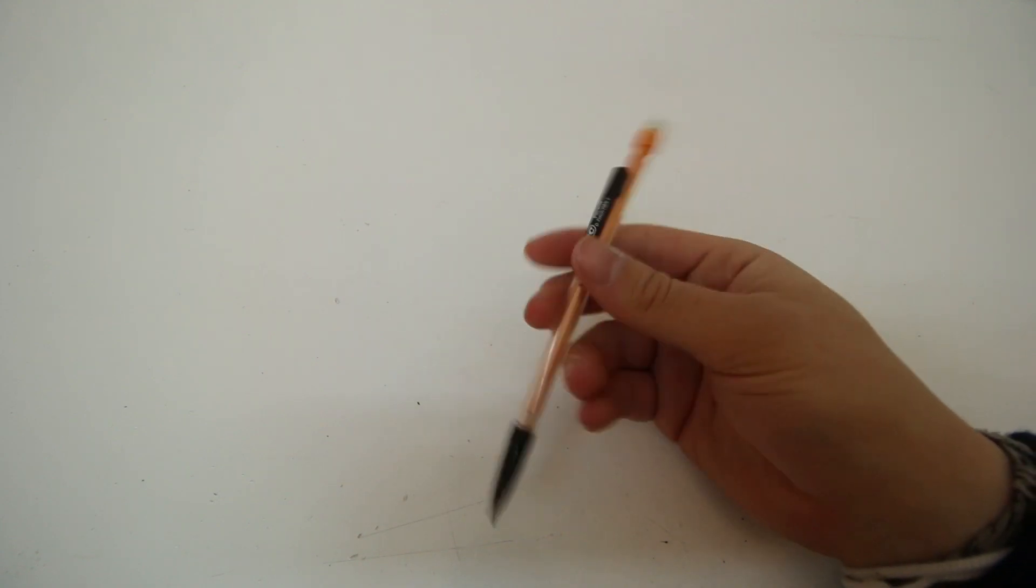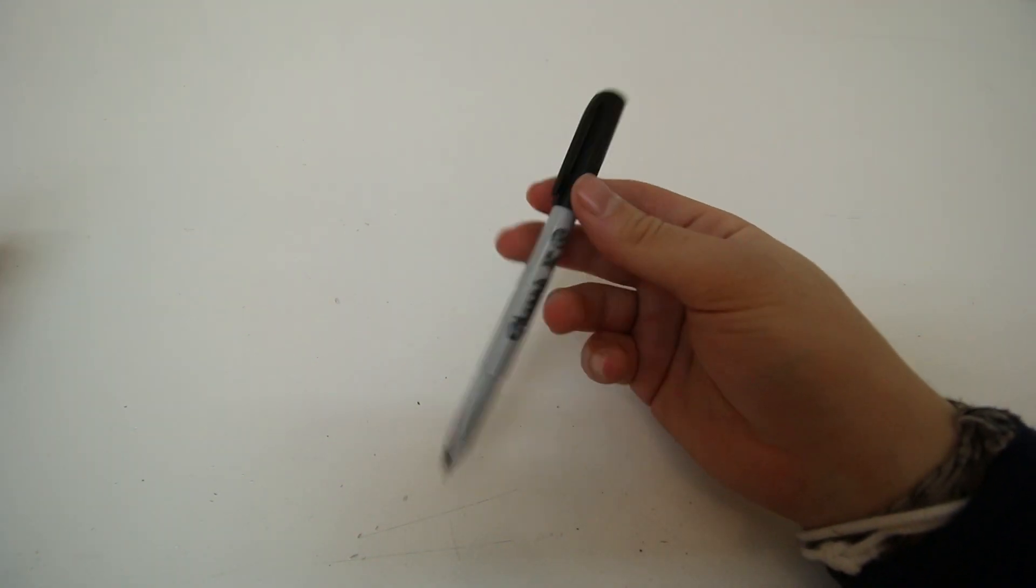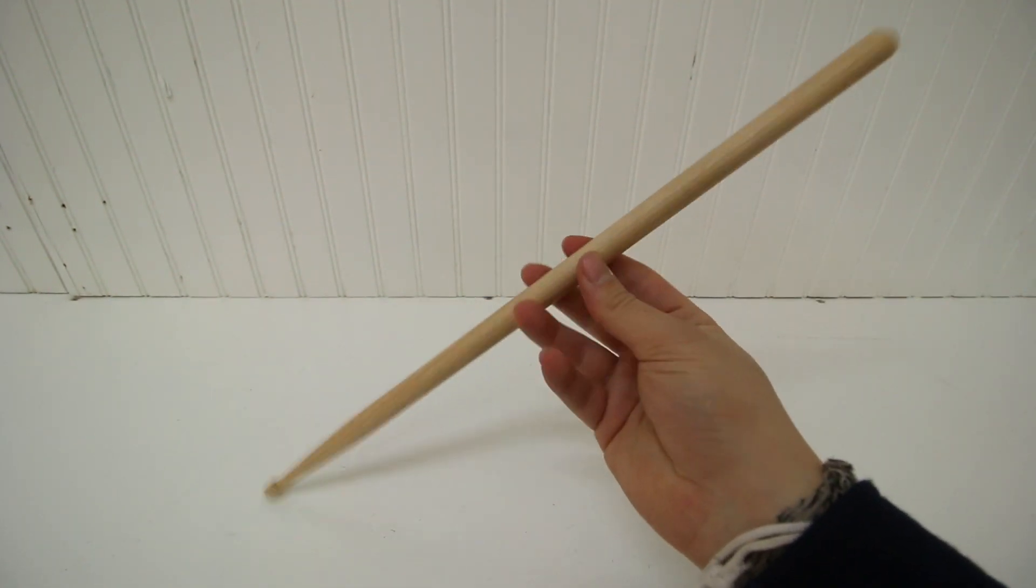Once you get good, you can do it with other writing utensils as well. And if the pen is giving you trouble, try starting out with something bigger, like a drumstick. It's easier because of its size.